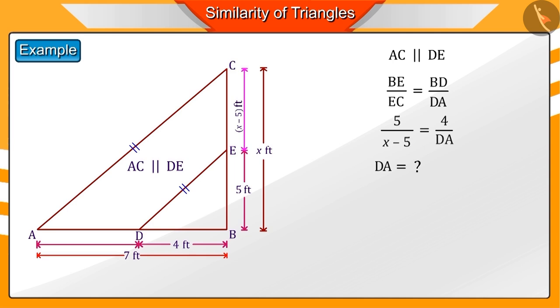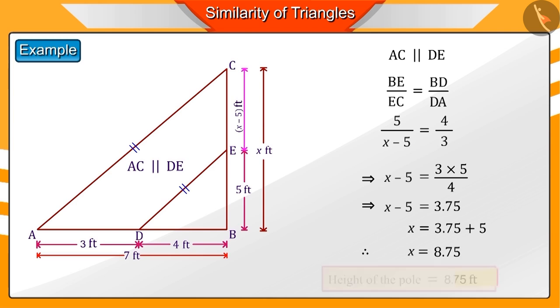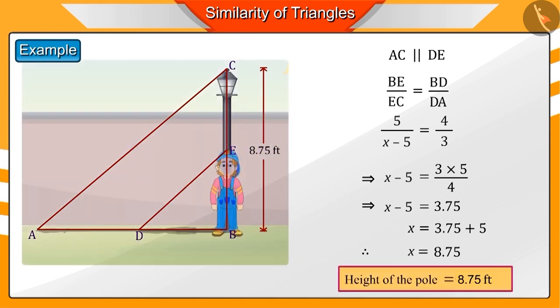Can you now think of a method to find the value of DA? You can find the value of DA as follows. Substituting this value of DA, we get X is equal to 8.75. Therefore, the height of the pole would be 8.75 feet. In this example, you saw how we can use the basic proportionality theorem in our day-to-day life as well.